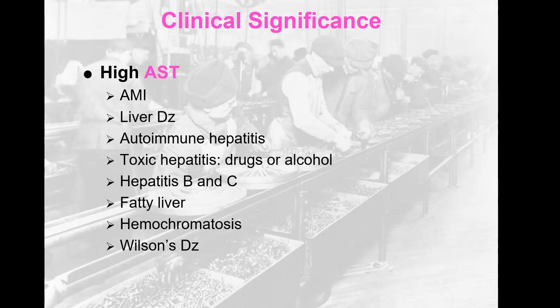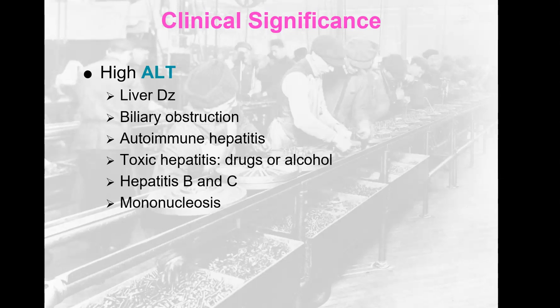High AST is seen in acute myocardial infarction because it is tied to the heart. Also liver disease, autoimmune hepatitis, toxic hepatitis from drugs or alcohol, hepatitis A, B, and C. Fatty liver — whether non-alcoholic fatty liver disease or alcoholic fatty liver disease, which is kind of a silent epidemic — also elevates AST. Additionally, hemochromatosis, where too much iron is stored in the liver, and Wilson's disease.